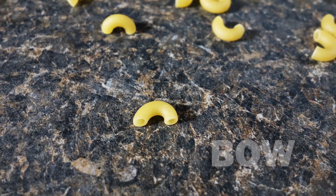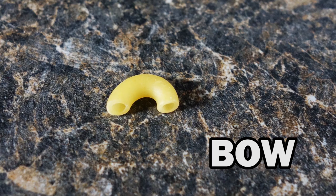Bow is the deviation of a longitudinal edge from a straight line, simply represented here by a piece of elbow macaroni.